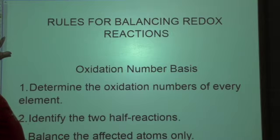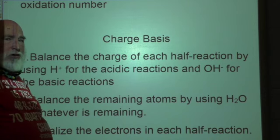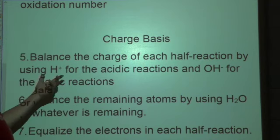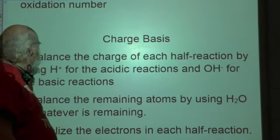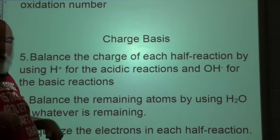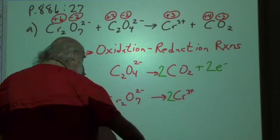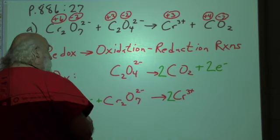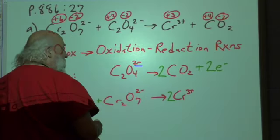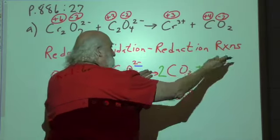That's the last time we deal with oxidation numbers in this process. Now we deal with the charge of the various components. Charge and oxidation numbers are not the same thing — sometimes they will be, but technically they are not. We balance the charge of each half reaction using hydrogen for acidic reactions and hydroxide for basic reactions. For the oxidation half reaction, we have a negative two charge on both sides — the charges are identical, so we don't have to do anything.